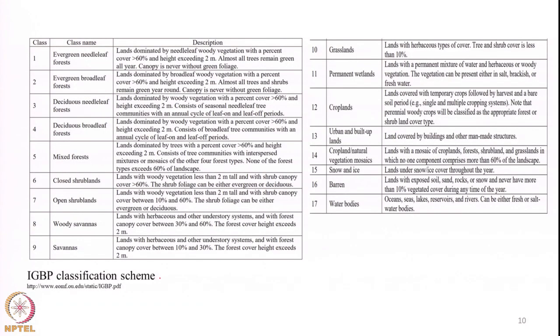Here is an example taken from what is known as the IGBP classification scheme — the International Geosphere Biosphere Program. They have defined 17 different land cover classes. If you want to define something as an evergreen needleleaf forest, it should satisfy specified criteria. If you want to categorize something as urban and built-up land, it should satisfy different criteria. Whoever does the classification follows these definitions — this is the classification scheme we have adopted for the project, so there will be no confusion.